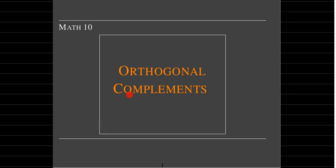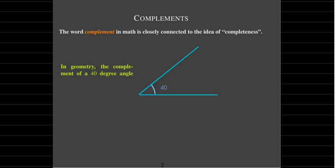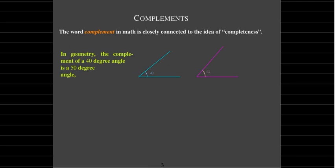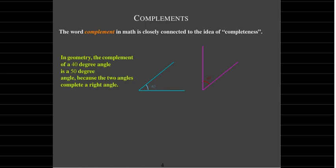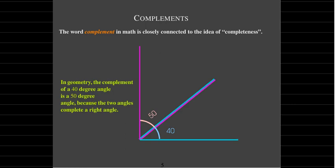Let's talk a minute about the word complement and how we use it in other parts of mathematics. Starting with geometry: you may have seen complementary angles. The complement of a 40 degree angle would be a 50 degree angle because together they form a complete right angle. The 50 degree angle completes the 40 degree angle to make a right angle.